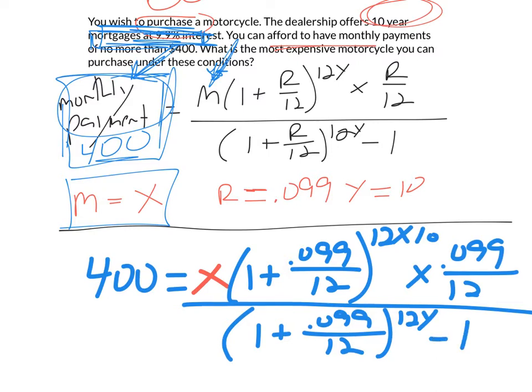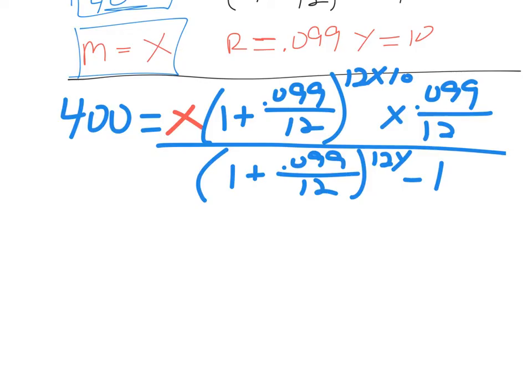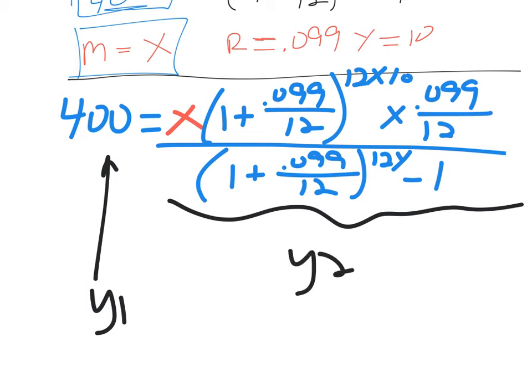So my goal is going to be to solve this equation for X to find how much motorcycle I can get for a $400 a month payment. So what I'm going to do is I'm going to set Y1 equal to 400, I'm going to set Y2 equal to this mess on the right-hand side, and I'm going to go about finding the point of intersection of those two sides of the equation.